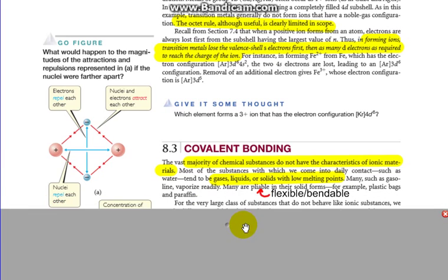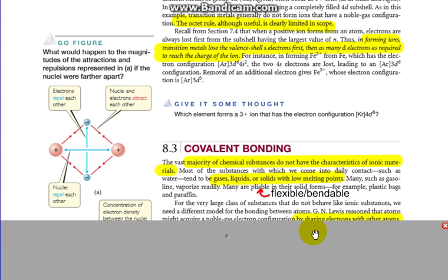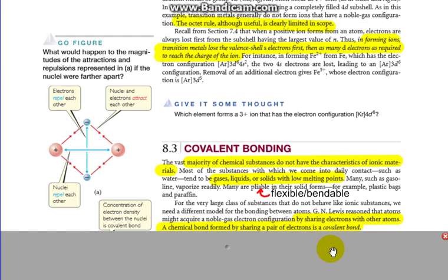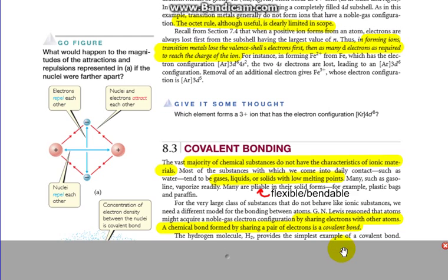Many are pliable in their solid forms, so if they are solid, they're flexible or bendable. That's what pliable means. For example, plastic bags and paraffin. For the very large class of substances that do not behave like ionic substances, we need a different model for the bonding between atoms. G.N. Lewis reasoned that atoms might acquire noble gas electron configuration by sharing electrons with other atoms. A chemical bond formed by sharing a pair of electrons is referred to as a covalent bond.